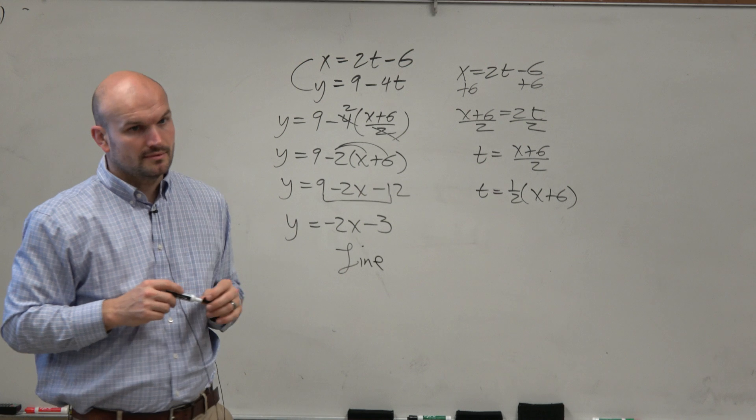That is the rectangular equation. If you wanted to plug those into your calculator, you would get a line that represents that negative 2x minus 3. And again, obviously, you can say that this is a line. Now let's go and look into another example.